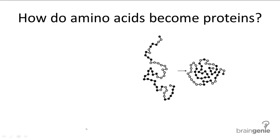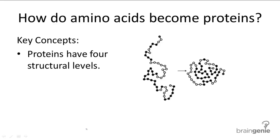But there are intermediary steps in between that you must take to get there. Proteins have four structural levels that it undergoes to fold into the final product. These are the primary, secondary, tertiary, and quaternary structural levels.